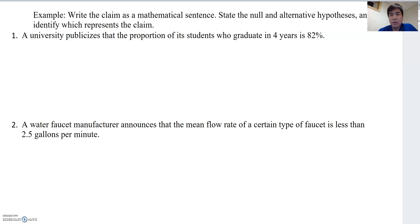Look at this example. Write the claim as a mathematical sentence, state the null and alternative hypothesis, and identify which represents the claim. Number one case, a university publicized the proportion of its students who graduate in four years is 82%. First, we need to find out whether this statement represents one-tail test or two-tail test.